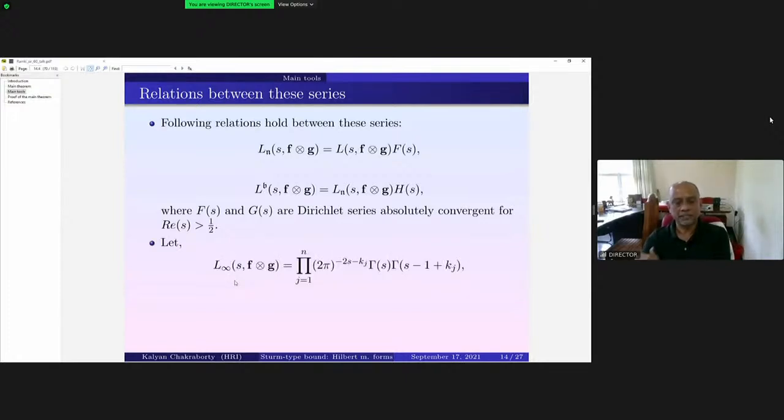So now we'll be using a result of Shimura with the analytic continuation of that Rankin-Selberg convolution. For that we introduce this L_infinity, the product of gamma factors. So the product from j equals 1 to n, and then you can define this lambda(s, f) as L_infinity times L(s, f×g) times this norm of different square ideal times n to the power s. So this is lambda(s, f×g).